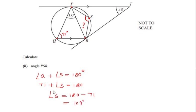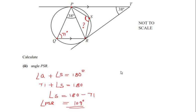So angle PSR equals 109 degrees. This is how we solved part B using the cyclic quadrilateral theorem. I hope you understood all the steps and liked my video — if so, please like, share, and subscribe to my channel. Thank you for watching.